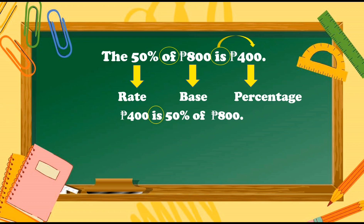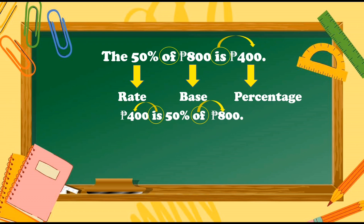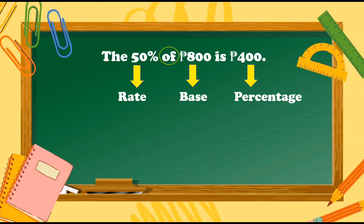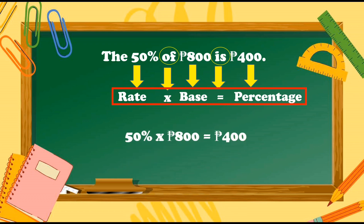If the number is beside the word 'is,' that is the percentage. While 50% has a percent sign — that means that is the rate. And 800 pesos comes after the word 'of,' that means that is the base. Did you know that the word 'of' also represents multiplication? While the word 'is' represents the equal symbol. This means that rate times base is equal to percentage — that gives us 50% times 800 pesos is equal to 400 pesos.